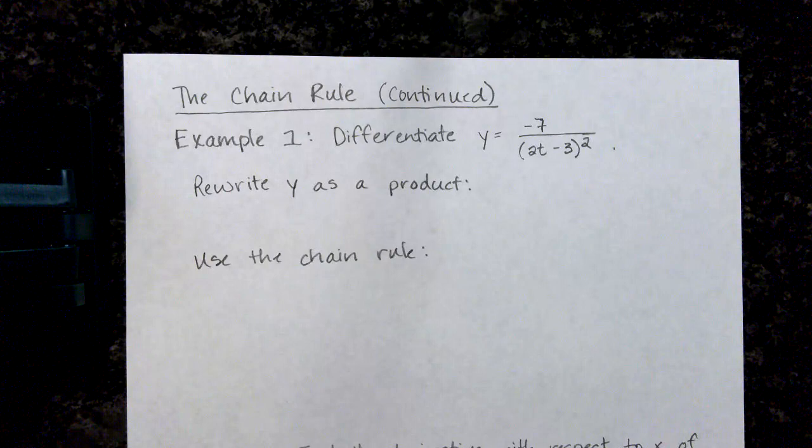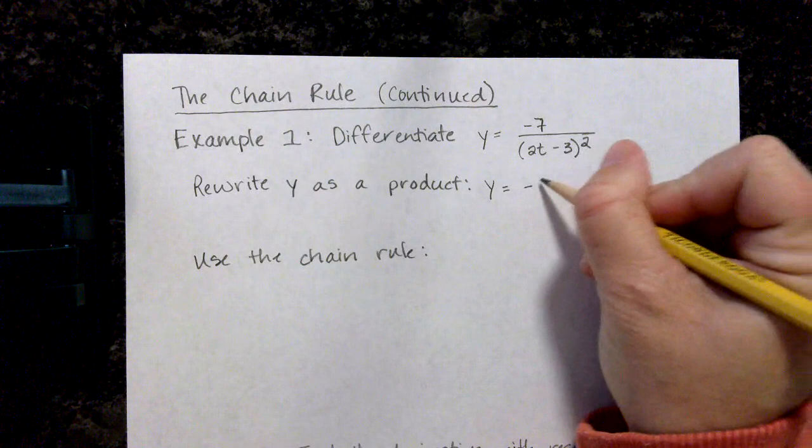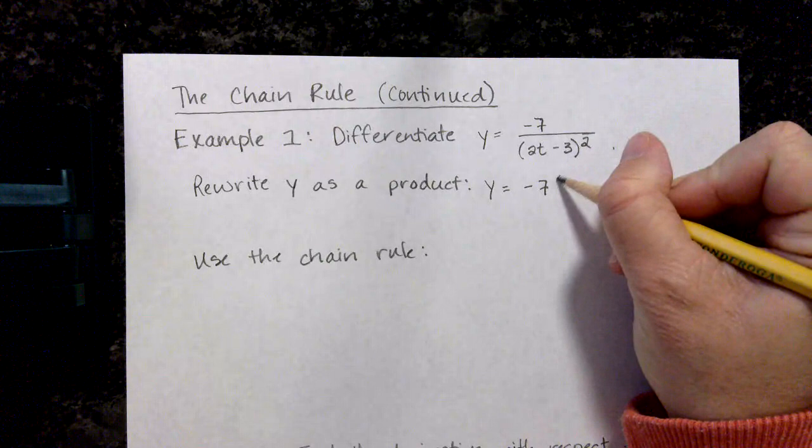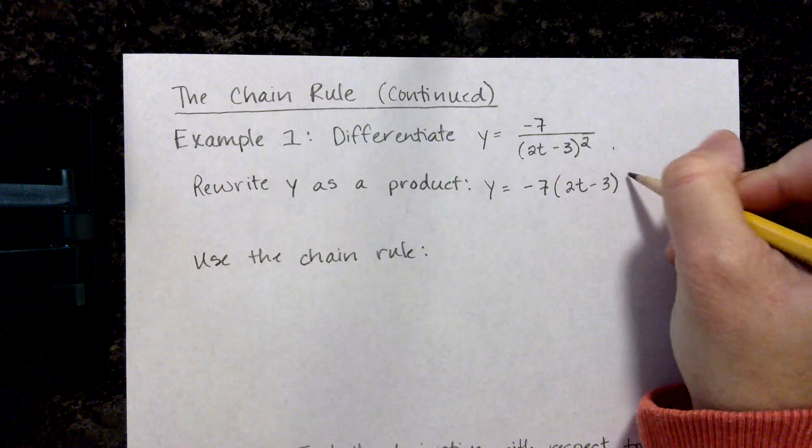The first thing that we want to do is we want to write y as a product. So this is negative 7 and we can rewrite our division by 2t minus 3 as multiplication of 2t minus 3 to the negative 2 power.